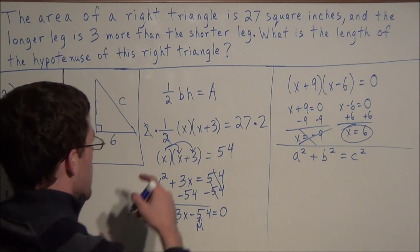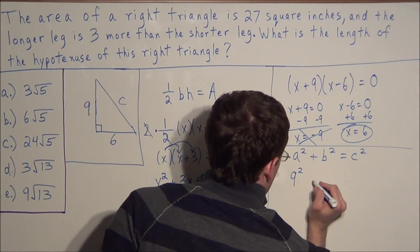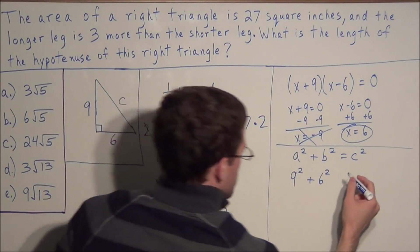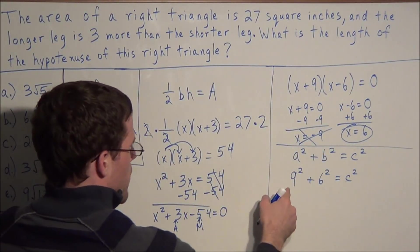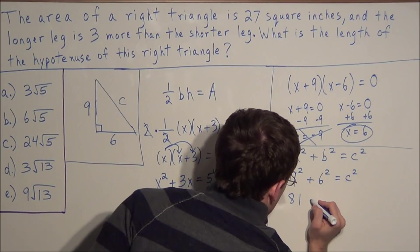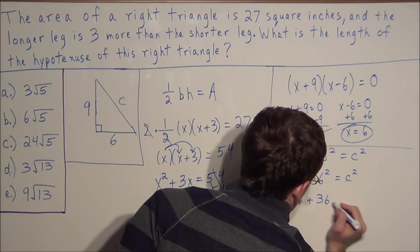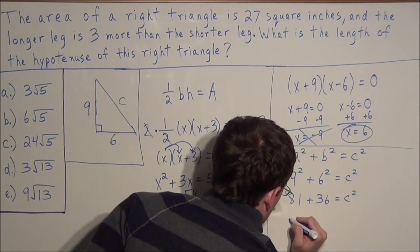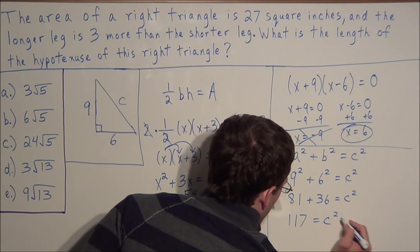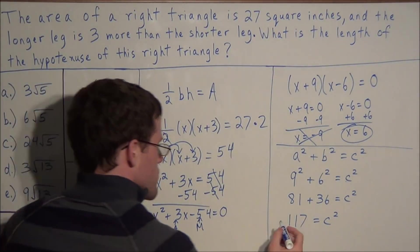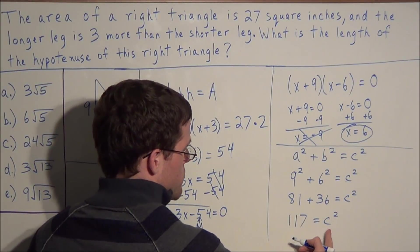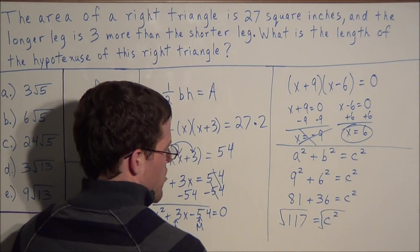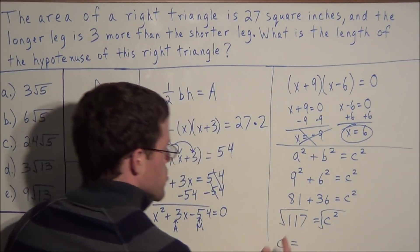We substitute: a equals nine and b equals six. So we have nine squared plus six squared equals c squared. Nine squared is 81 and six squared is 36. Eighty-one plus 36 equals 117, so we have 117 equals c squared. To solve for c we take the square root of both sides — that's the opposite of squaring — giving us c equals the square root of 117.